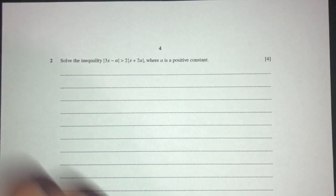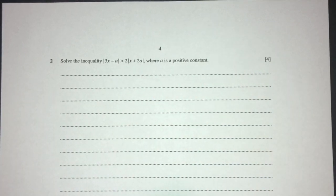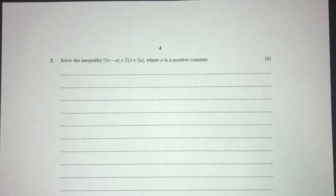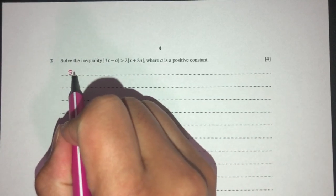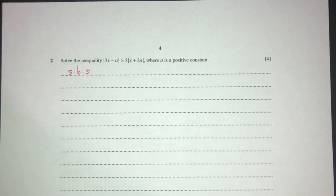Now let's move on to question number 2. Here we have to solve this equation where a is a positive constant. The first thing we realize here is that we have modulus on both sides and x on both sides. When this is the case, we just square both sides as our first step.